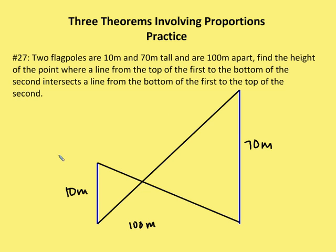I have the diagram already drawn. The first flagpole is 10 meters high and the second is 70 meters high, 100 meters apart. These are not drawn to scale. We have two triangles with two parallel lines, giving us alternate interior angles that are congruent, and also vertical angles, so we have two similar triangles. The relationship is 10 to 70 units, but we need to find the distance from the intersection point to the ground.